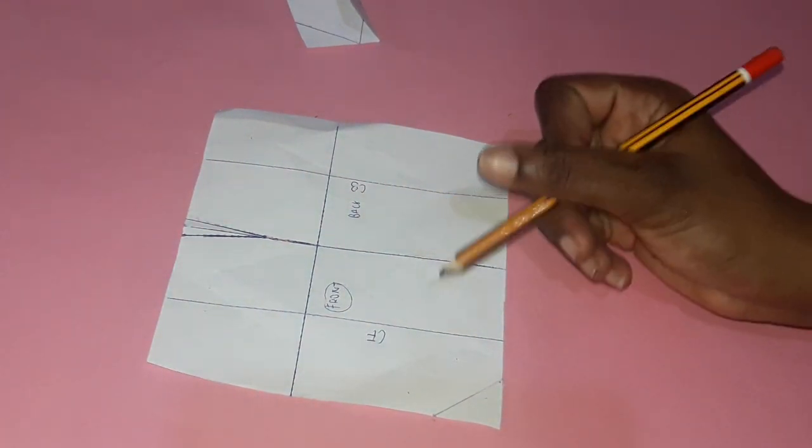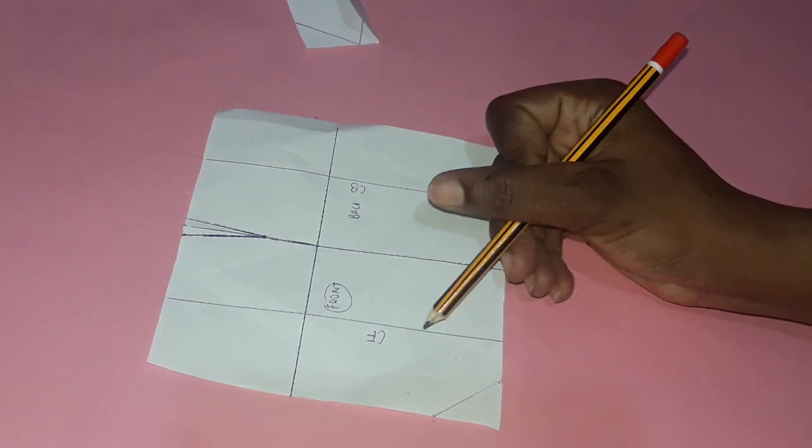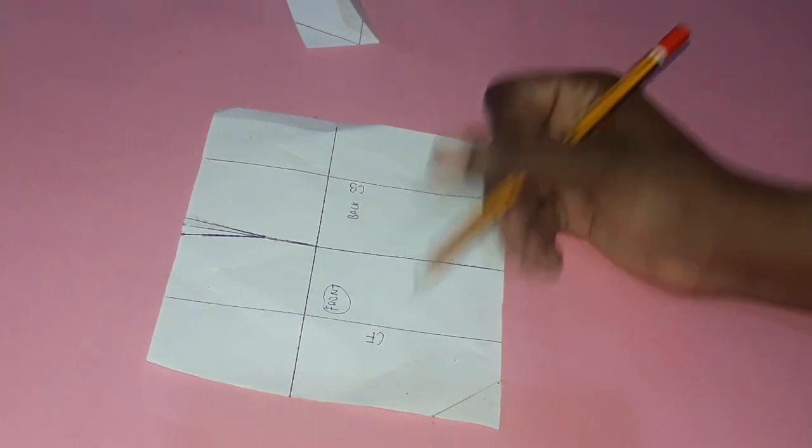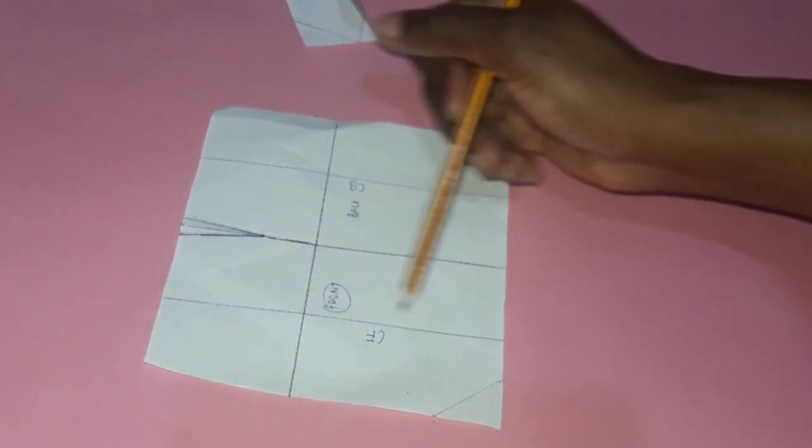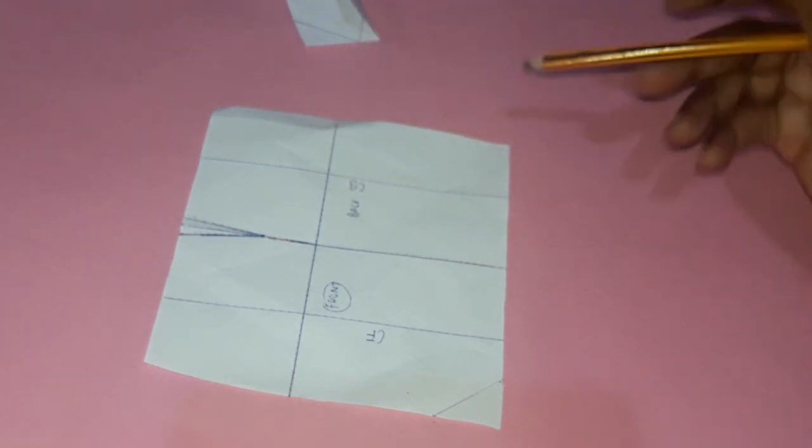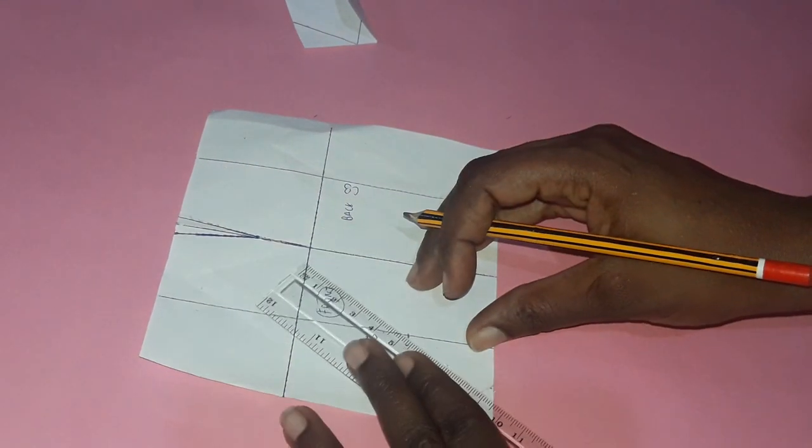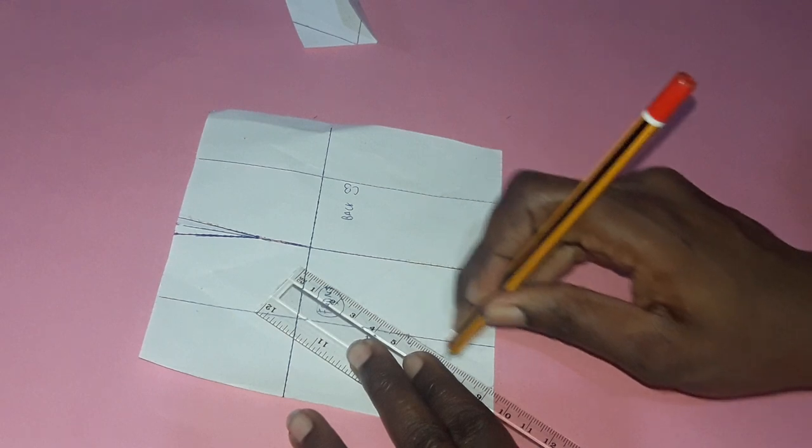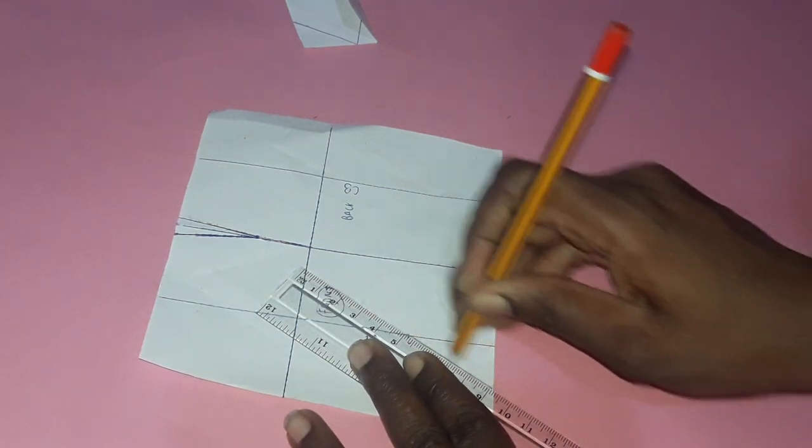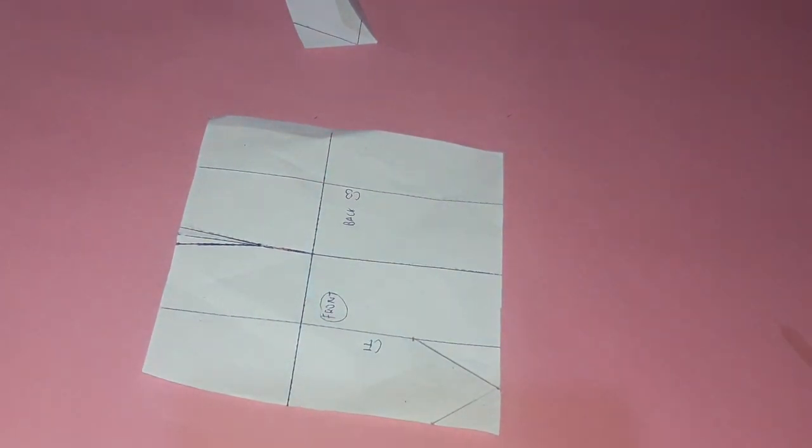The second thing is you would notice that there's also a line that ends here and it ends exactly on the center front line before it goes up here. So I'm just going to say okay, I want it to end here. So you mark your point and draw another line. So this is my second line.